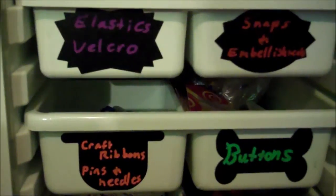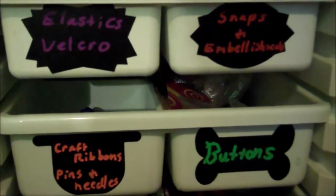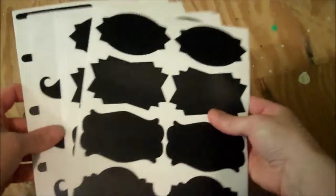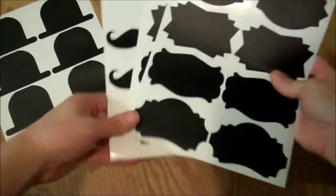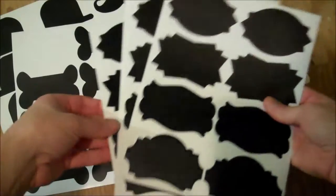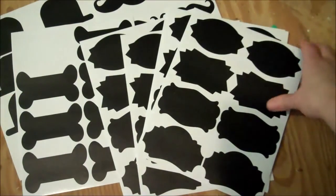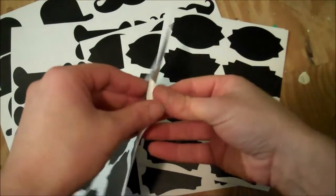Hands down my absolute favorite thing to do with chalk markers is labeling. Chocola sells these little vinyl chalkboard labels. You get 80 of them in a pack and there's a few that, you know, there's like little hats and some mustaches and some dog bones, and then there's some more traditional shape labels. Basically what they are is vinyl stickers.